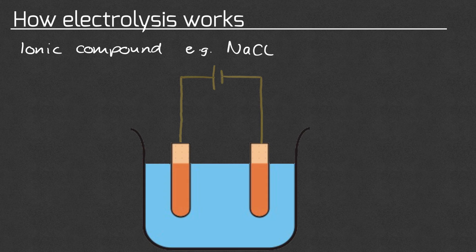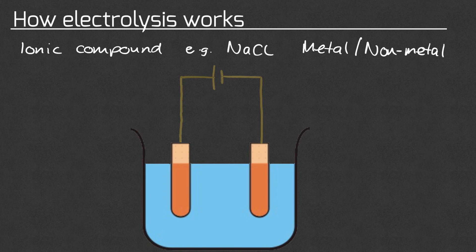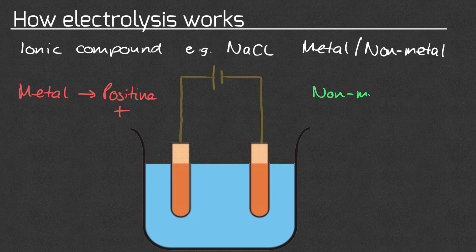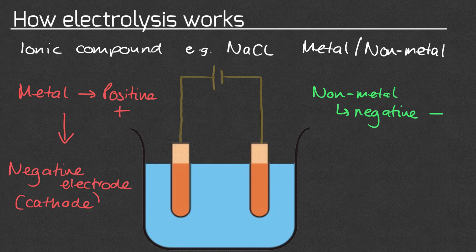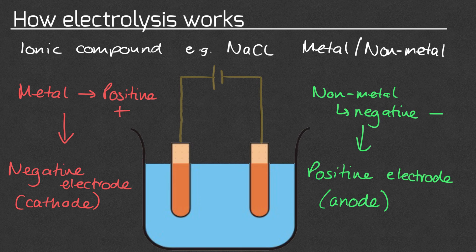We're now going to look in a little bit more detail at how electrolysis works. Remember that electrolysis works on an ionic compound — for example sodium chloride. It's also important to remember that an ionic compound has a metal and a non-metal in it. The metal ion is always going to be positive and the non-metal ion will always be negative. The positive metal ion is going to be attracted to the negative electrode because opposites attract, so the positive will move to the cathode. The non-metal negative ion will move to the positive electrode — the anode — because again opposites attract.